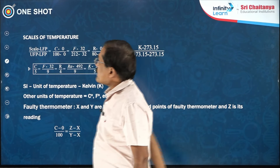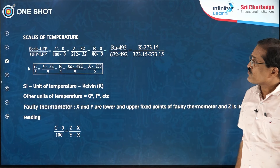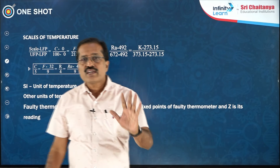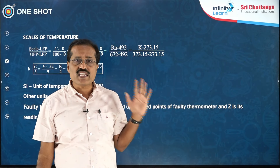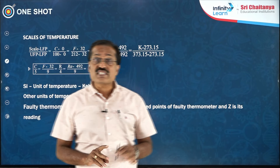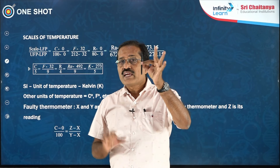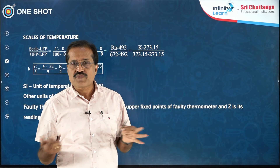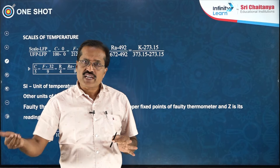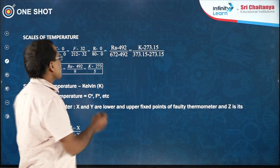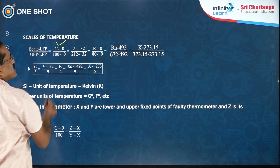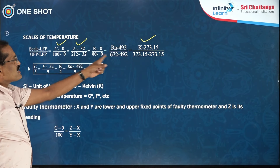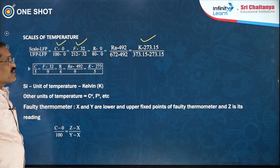The most important part of today's topic is the scales of temperature. In thermometry, the major part is about different scales of temperature, because temperatures can be measured on any kind of thermometer with different scales. Like the clinical thermometer which uses the Fahrenheit scale — there are different scales, but the most important ones are the Celsius scale, Fahrenheit scale, and Kelvin scale. No need to concentrate on the Réaumur scale and Rankine scale.